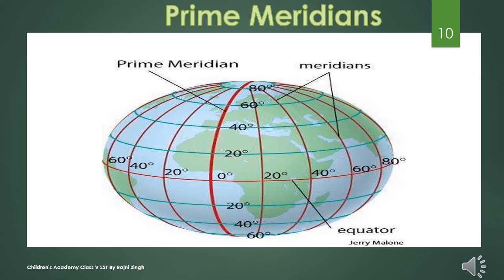As one moves away from the equator and goes towards the poles, the distance between any two meridians decreases, and the distance between the meridians is lowest at the poles.